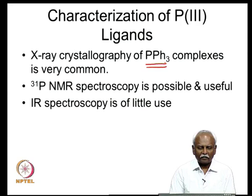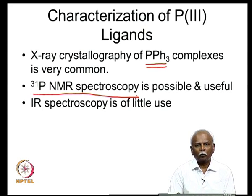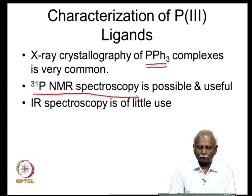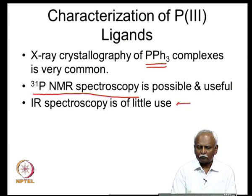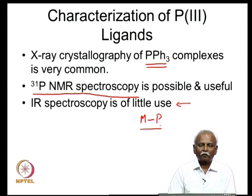One can also carry out phosphorous-31 NMR spectroscopy, which is a very useful technique because no other element in the molecule might interfere in the spectrum — only the ligand is visible. This makes it an extremely useful tool due to non-interference. Infrared spectroscopy is unfortunately of not much value here, because metal-phosphorous single bonds appear in the very low energy region around 300–400 cm⁻¹, which is quite crowded and often not useful for analysis.